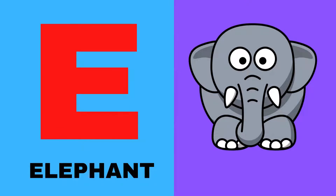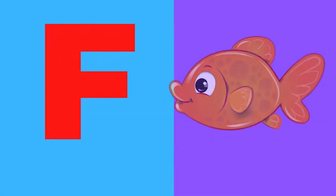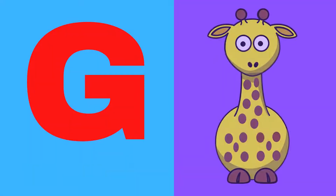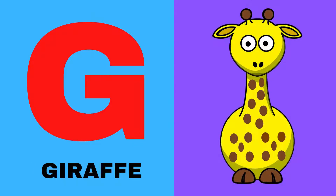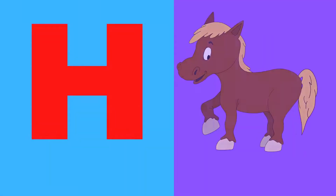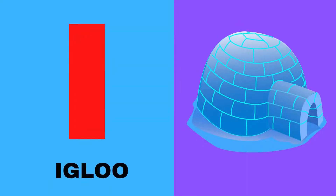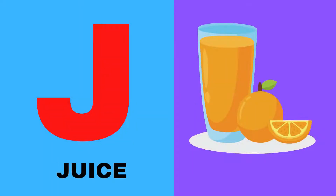F for fish, G for giraffe, H for horse, I for igloo, J for juice.